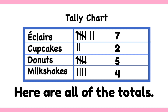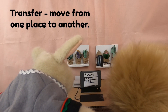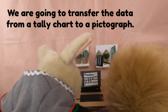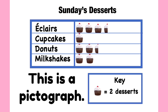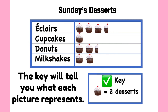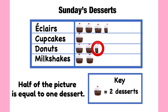Here are all of the totals: seven, two, five, and four. Transfer means to move from one place to another. We are going to transfer the data from a tally chart to a pictograph. A pictograph represents data through pictures or symbols. The key will tell you what each picture represents. Each picture equals two desserts. Half of the picture is equal to one dessert.